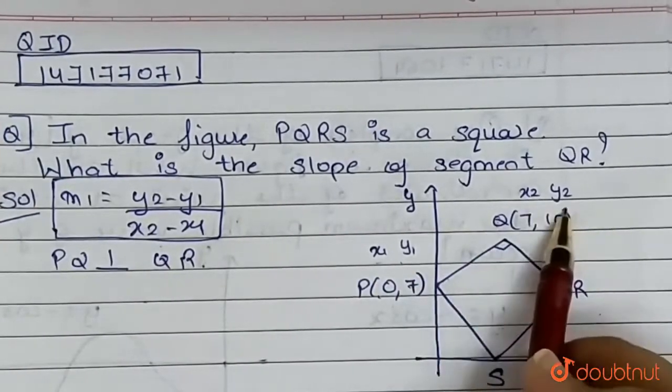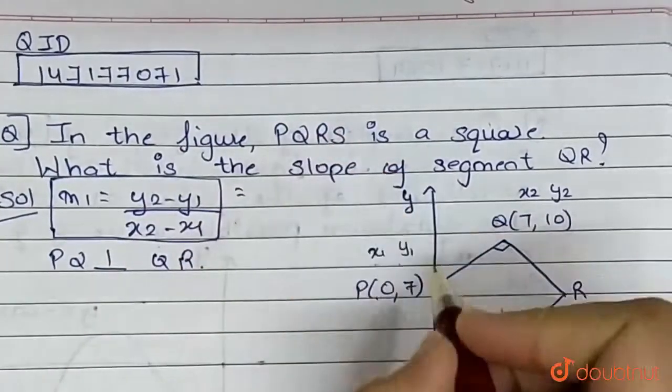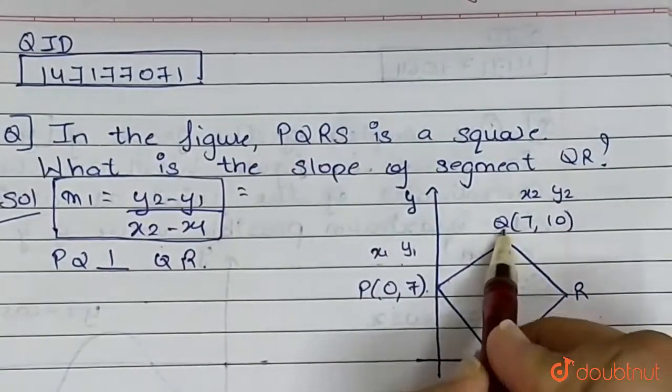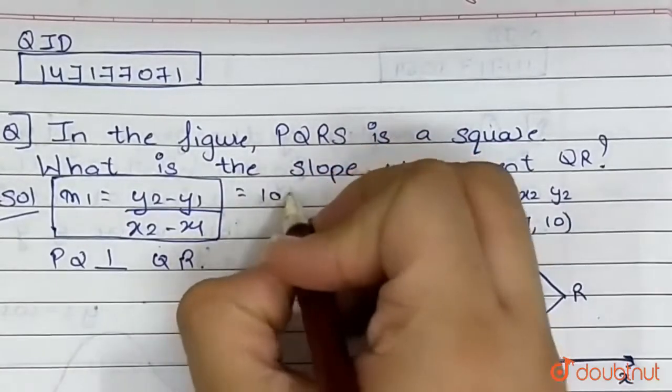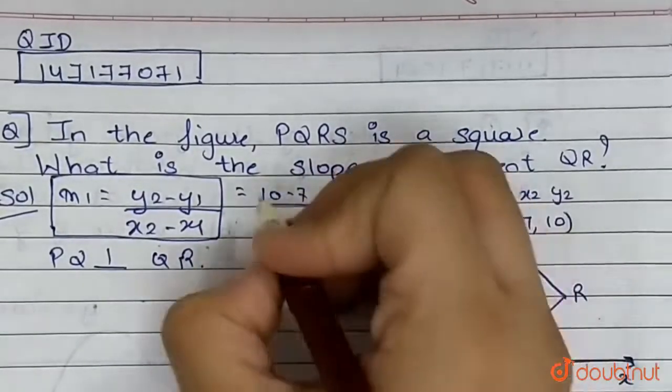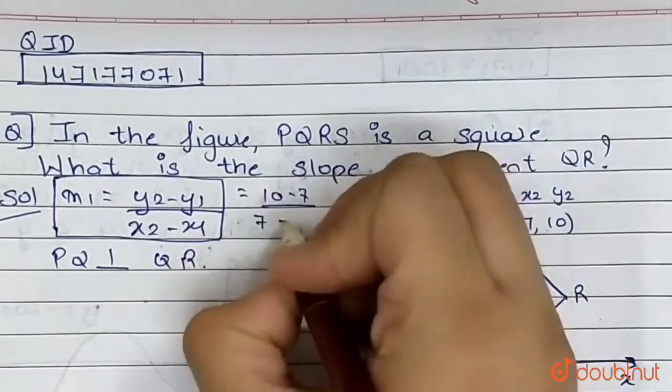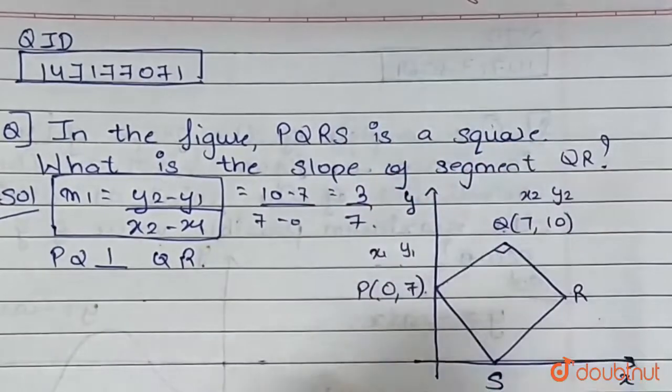Now if we consider P as (x1, y1) and coordinates of Q as (x2, y2), we get the slope of PQ as y2 minus y1, which is 10 minus 7, upon x2 minus x1, which is 7 minus 0, which equals 3 upon 7.